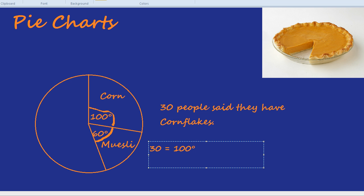Divide by 10. So 3 people is represented on the pie chart by 10 degrees. If 30 people are represented on the pie chart by 100 degrees, cornflakes, then 3 people must be represented by a 10 degree angle. So a 60 degree angle, how many people is that?